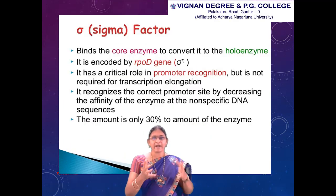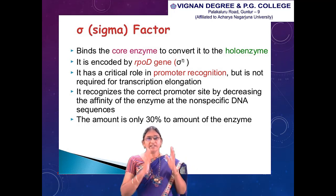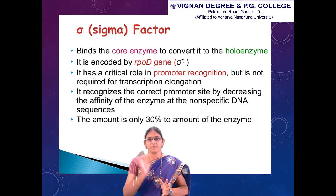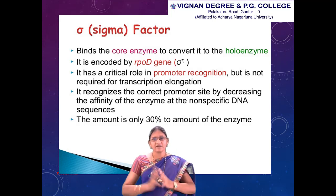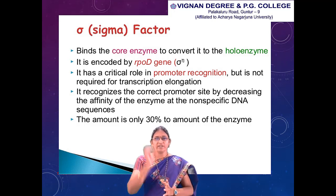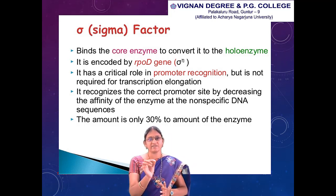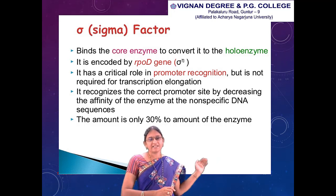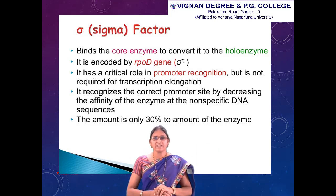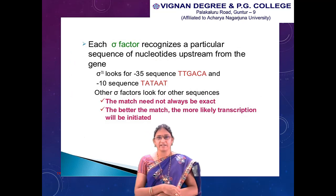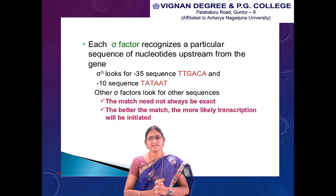The sigma factor is a specificity factor that binds to the core enzyme to convert it to the holoenzyme. It is encoded by rpoD and has a critical role in promoter recognition. The promoter is the start site of transcription that promotes transcription, but the sigma factor is not required for transcription elongation — only for initiation. It recognizes the correct promoter site by decreasing the affinity of the enzyme at non-specific DNA sequences. Each sigma factor recognizes a particular sequence of nucleotides upstream from the gene.